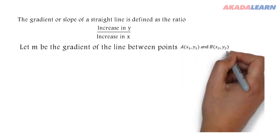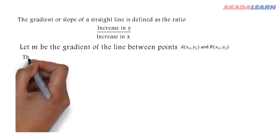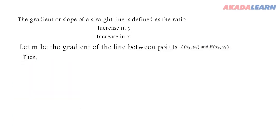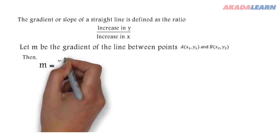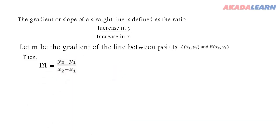Let m be the gradient of the line between points A and B. Then our gradient m will be equal to y₂ minus y₁ over x₂ minus x₁.